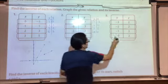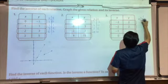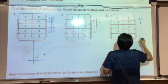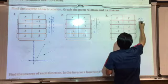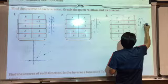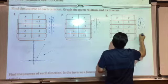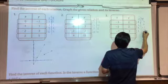Let's finish off the last one too, and then we'll just graph them. The inverse values are: 2, negative 3; 2, negative 2; 2, negative 1; 2, 0.